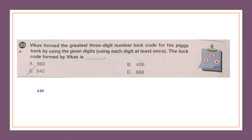Question number 23: Vikas formed the greatest 3-digit lock code for his piggy bank using the digits 0, 6, 4, with each digit at least once. For the greatest number, the largest digit comes first, then second largest, then smallest: 6, 4, 0. So our answer is option C.